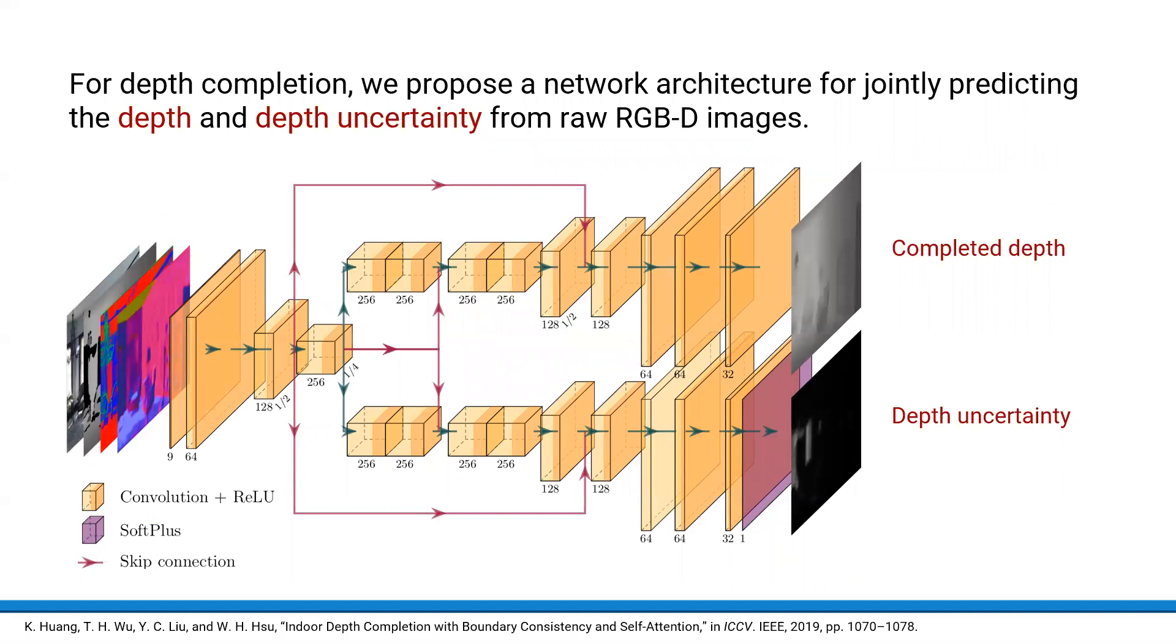We introduce a new deep learning model providing uncertainty estimates for the probabilistic depth completion of RGBD images. The network architecture is based on previous work for indoor depth completion. Our contribution is to extend it with an additional output decoder and we then train it to jointly predict the depth and depth uncertainty for the context of robotic mapping.